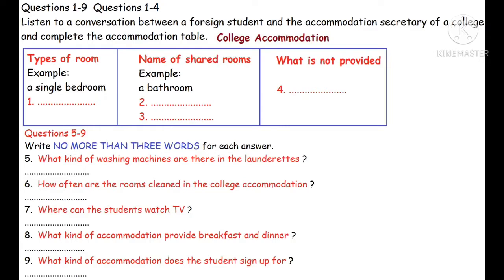That sounds very good. Before I decide, let me ask about the other possibility — the homestay programme. We select local families who want to have students staying with them for a short period. Basically there are two kinds of accommodation available. The first one is half-board, where you just eat breakfast and evening dinner with the family. Lunch you would have on campus during the week, but at weekends you'll have all your meals with the family.